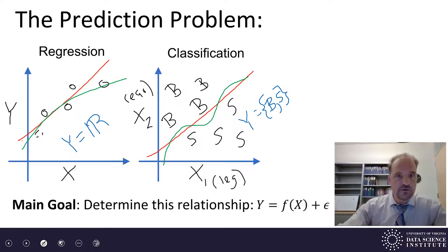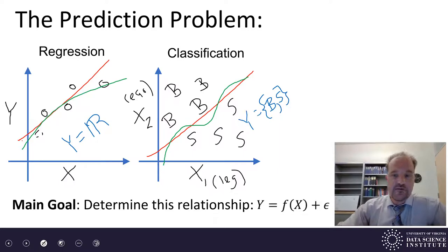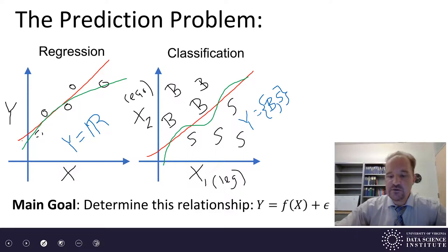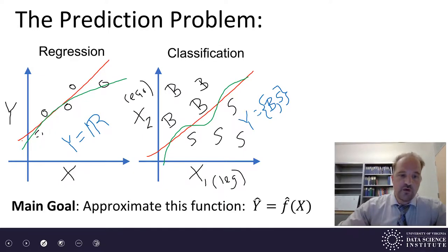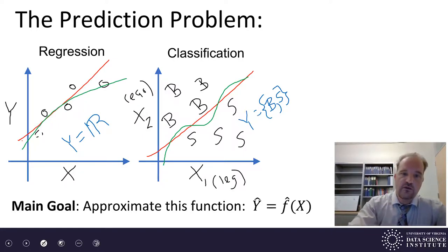The main goal of the prediction problem is to determine this relationship between the outputs y and our inputs x. We can't exactly determine this relationship, and it's a relationship rather than a function, because sometimes you'll have different outputs for the same input — meaning two different houses might have the same square footage but different prices. We're going to approximate it with a function. We write this function as y-hat equals f-hat of x. The hats refer to the red and green lines we drew that approximate the relationship.